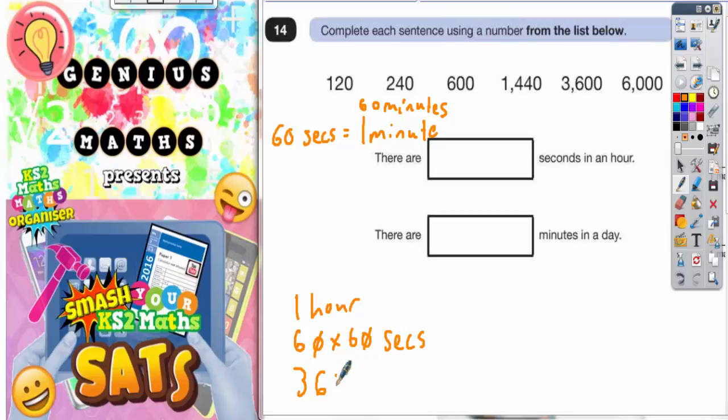So you got a zero plus another zero, so that's two zeros. So there would actually be 3,600 seconds. So there would be 3,600 seconds in one hour. So the answer to the first box is that one: 3,600.